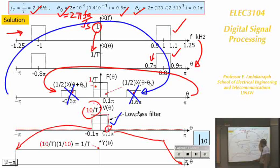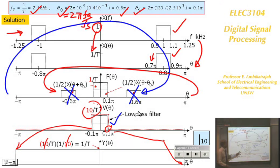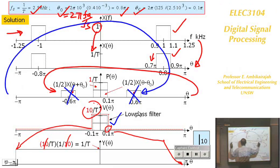Finally, downsampling by 10 stretches the spectrum (frequency axis scaled by 10) and reduces the amplitude by 1/10. The filter gain of 10 cancels the amplitude reduction from downsampling, leaving amplitude 1/T at the output. Remember: spectrum wraps back when it goes outside π because the spectrum is periodic.